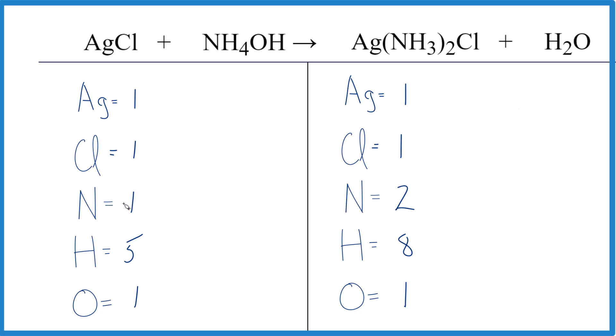Silver, chlorines, those are good. I leave oxygen until last. I like to leave hydrogen towards the end. Let's just put a 2 here because that's going to fix the nitrogens. 1 times 2. So now we have 2 nitrogens.